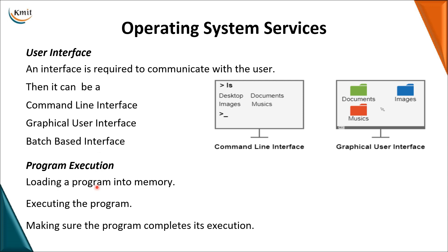Next, we move on to program execution. Ultimately, we use the system to write a program and execute it. A program is a set of instructions, and when the program is under execution we call it a process. When you want the program to be executed, it will be in your secondary memory and must be loaded into main memory, because the CPU only executes programs present in main memory. The main job of the operating system is to load a program into memory, execute it, and make sure it is completely executed.